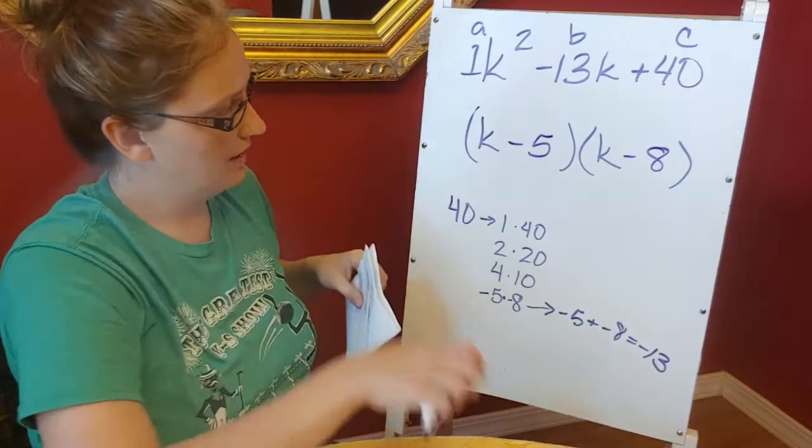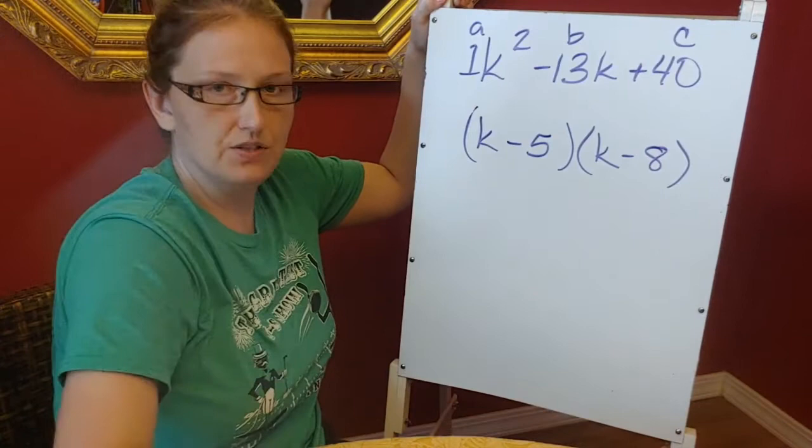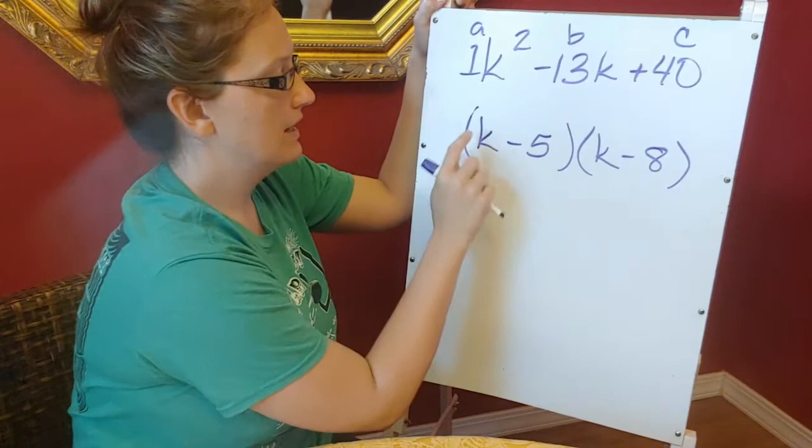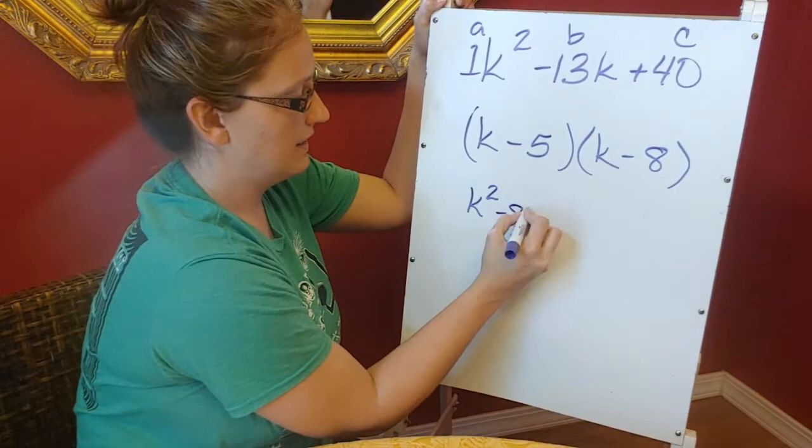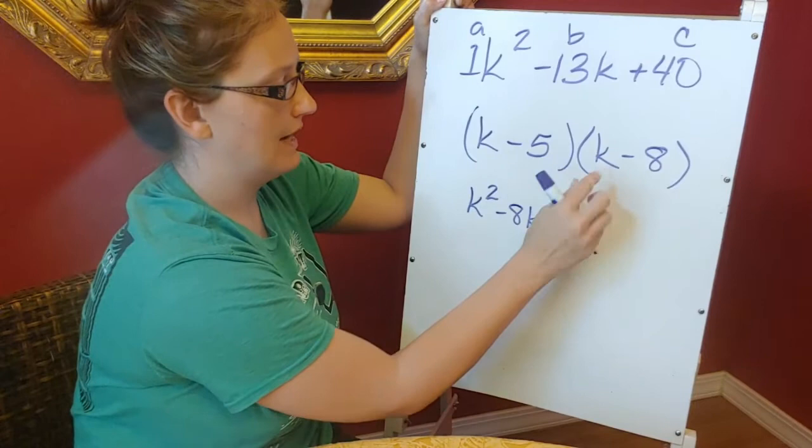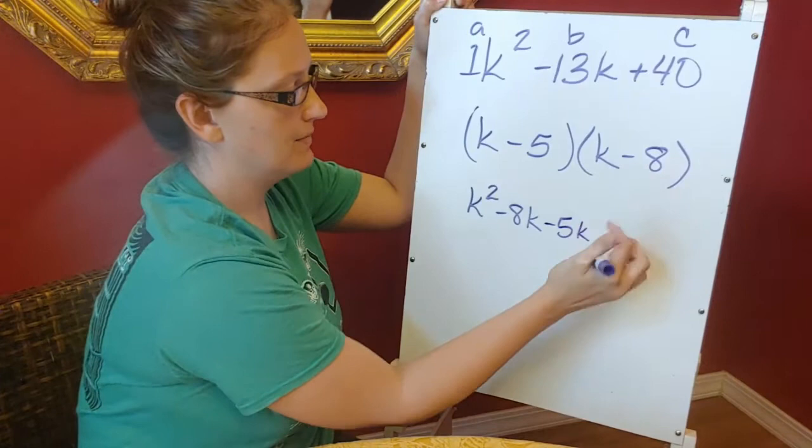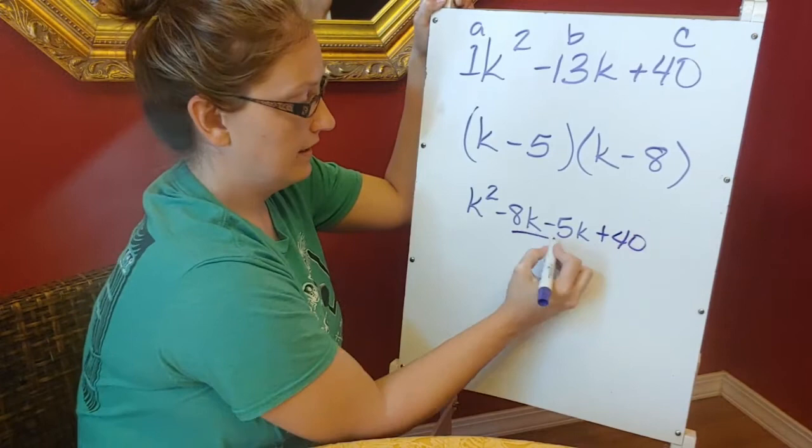We're going to look again at making sure that this works, just showing you that this works. I'm going to take k and I'm going to double distribute this. So k distributed through my second set of parentheses, k times k gives me k², k times a -8 gives me -8k. I'm going to take this -5 and do the same thing. -5 times k gives me -5k, and -5 times -8, negative times a negative gives me +40. And if I combine my like terms in the middle, it ends up checking out.